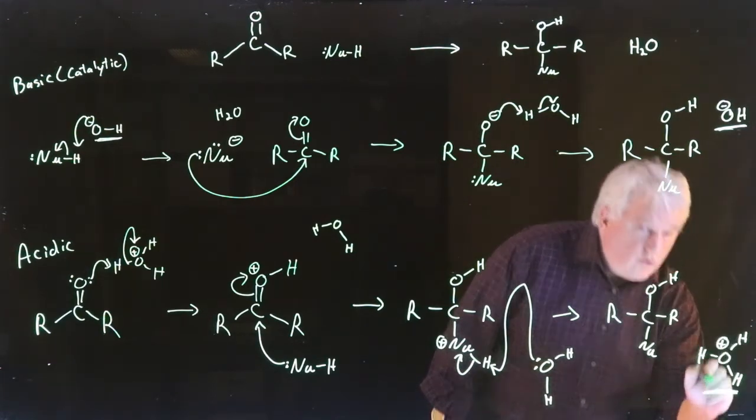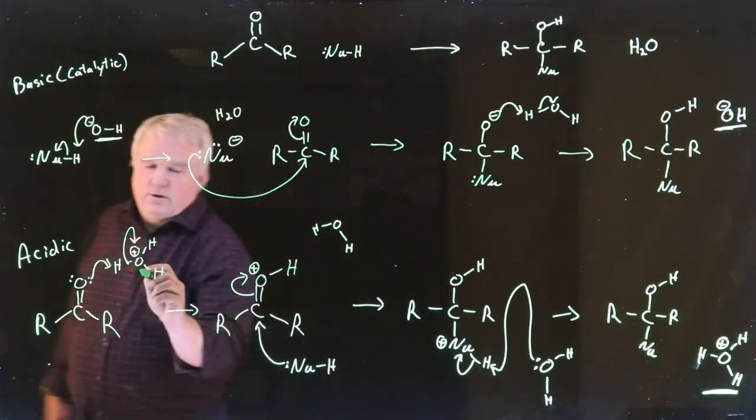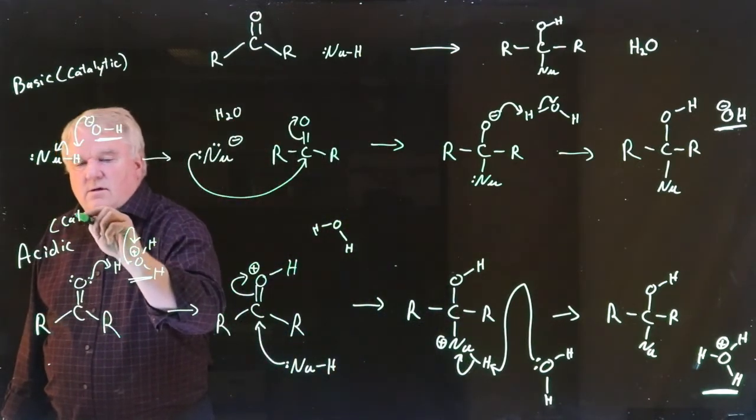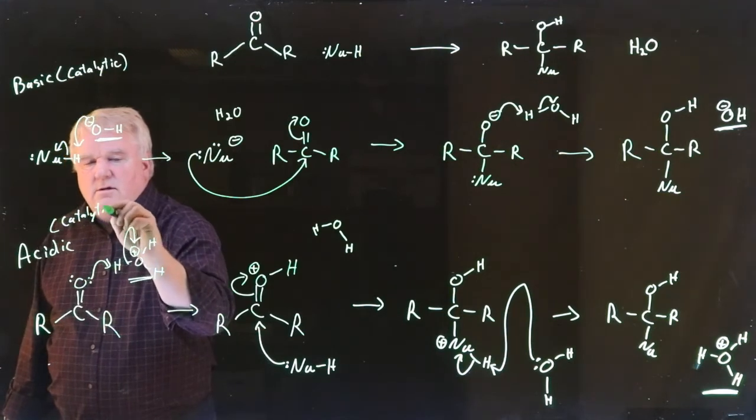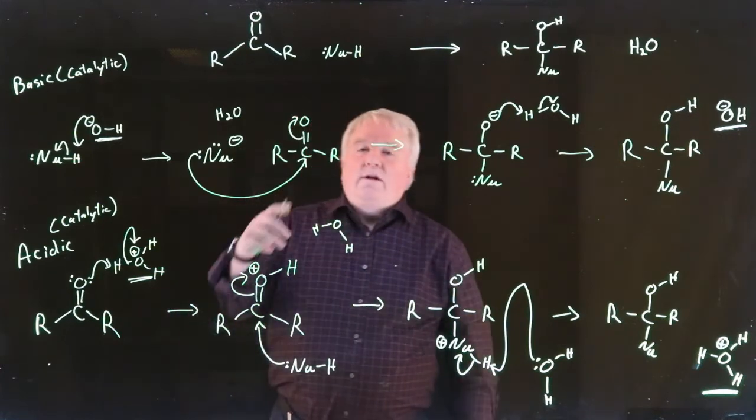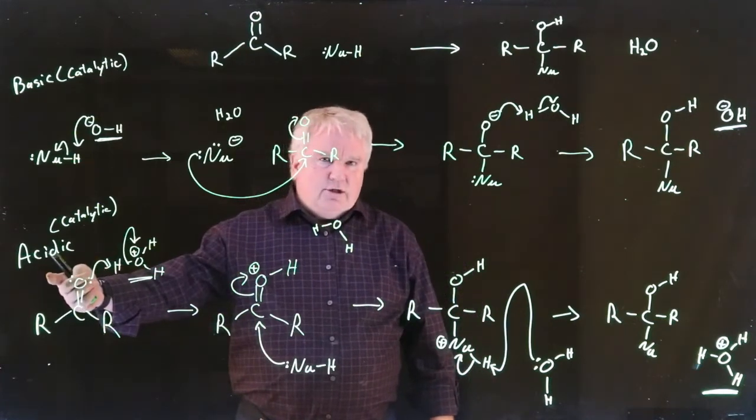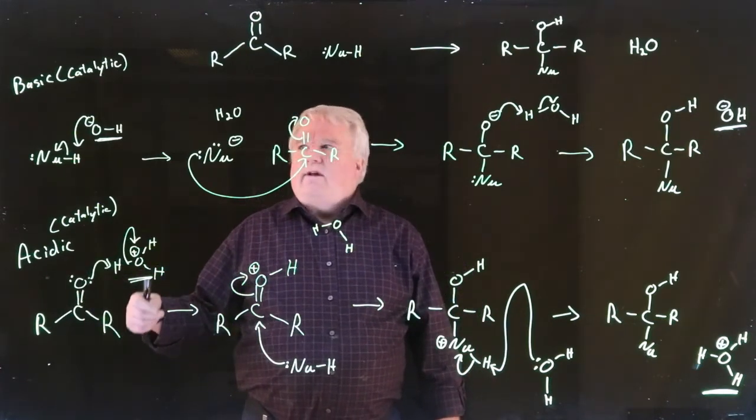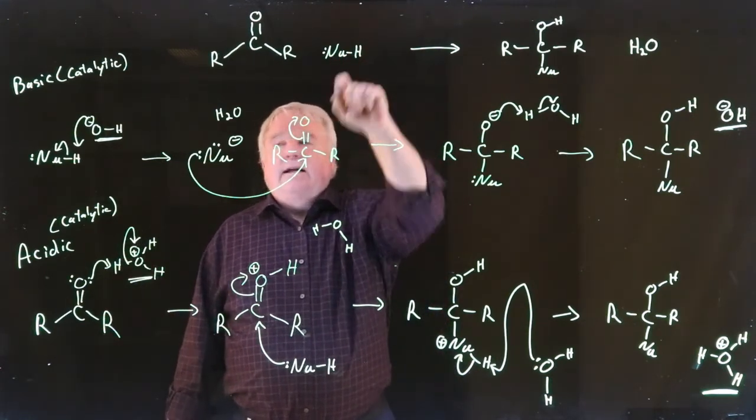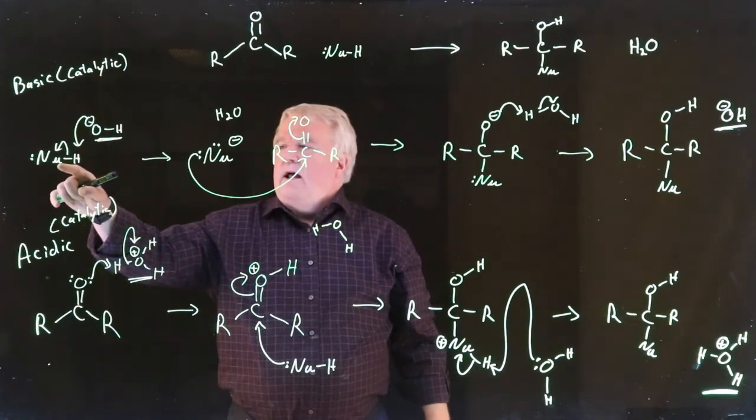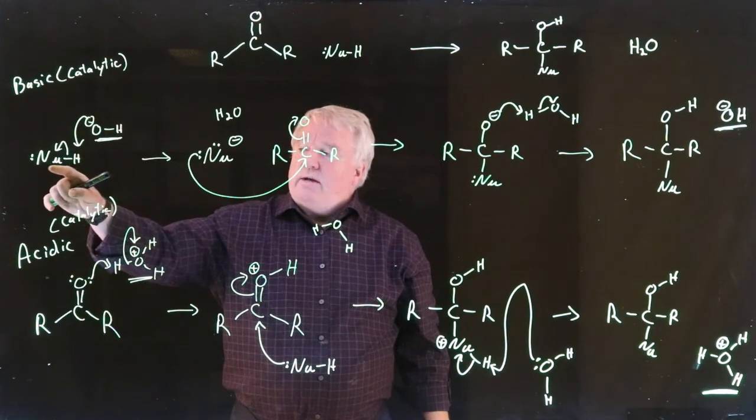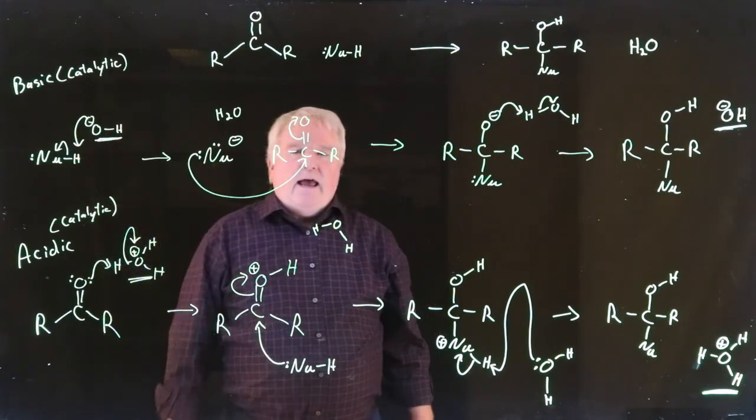And notice that we reform our acid which we started with over here. So our acid is also catalytic. So we can add weak nucleophiles by using acidic conditions. And we can use strong nucleophiles by starting off with what is really acting as a base, pull off the proton, and then use the conjugate base of that reaction as our nucleophile to add.